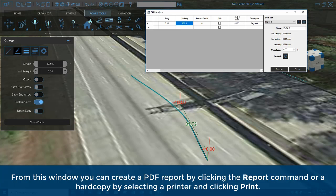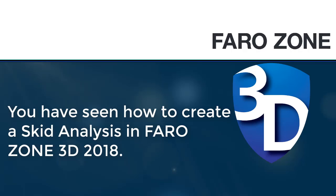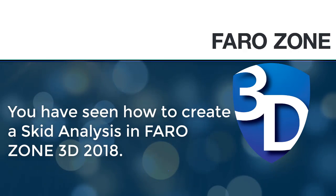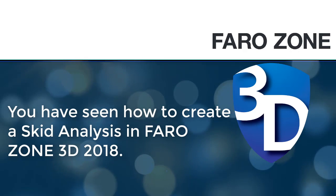From this window, you can create a PDF report by clicking the report command, or a hard copy by selecting a printer and clicking print. You have seen how to create a skid analysis in Ferrozone 3D 2018.